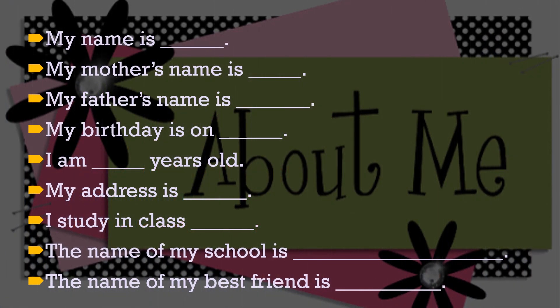Students, in this slide, here are some questions for you so that you can learn to tell about yourself. Take a pencil and paper and read these sentences very carefully and fill the blanks with right answers. Firstly, I am asking you about your name: My name is — here you have to write your name in the blank space.